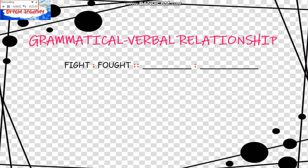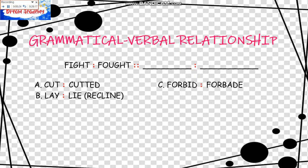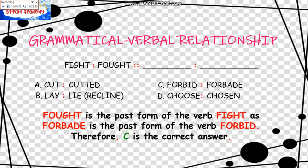The next one is the Grammatical-Verbal Relationship, where Fight is to Fought as blank is to blank. The choices are: A, Cut is to Cutted — but Cutted is not the right past form of cut; B, Lay is to Lie — but the order is reversed; C, Forbid is to Forbade; D, Choose is to Chosen. Fought is the past form of Fight, just as Forbade is the past form of Forbid. Therefore, C is the correct answer.